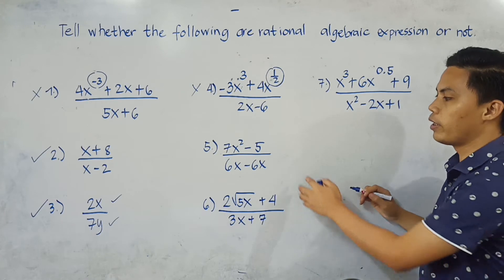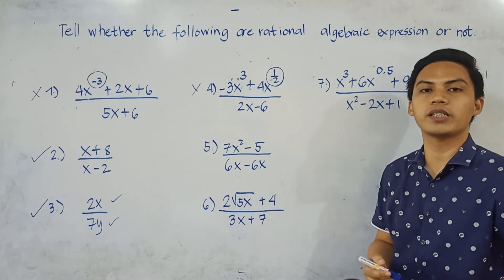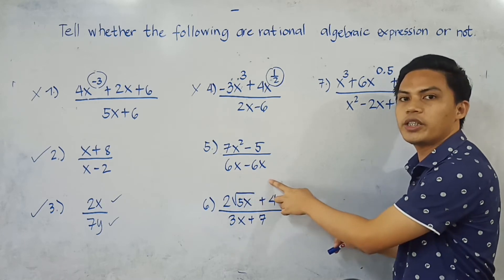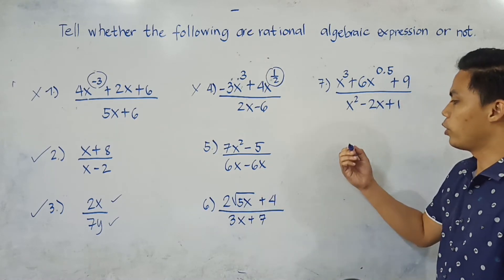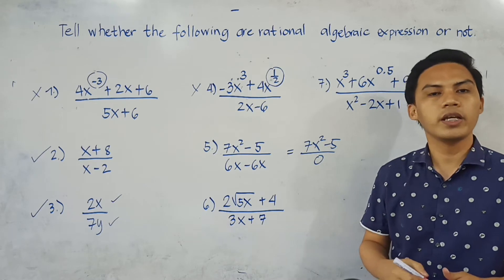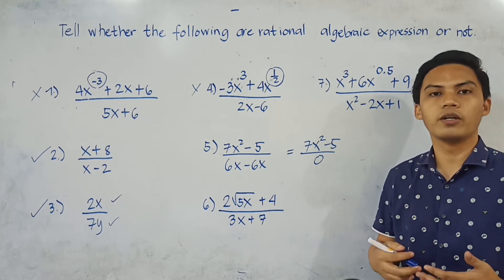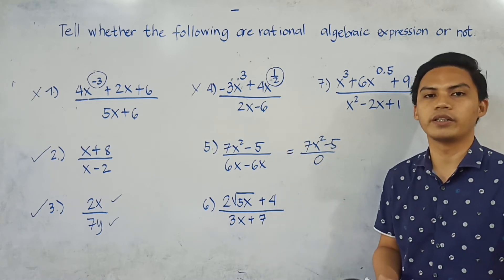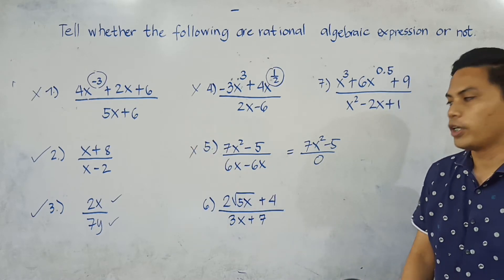Number 5: We have 7x squared minus 5 all over 6x minus 6x. Looking closely at the denominator, 6x minus 6x equals 0. So simplified, the expression becomes 7x squared minus 5 all over 0. Based on our definition, the denominator must not be equal to 0 — if it becomes 0, then the expression is undefined. Therefore, number 5 is NOT a rational algebraic expression.